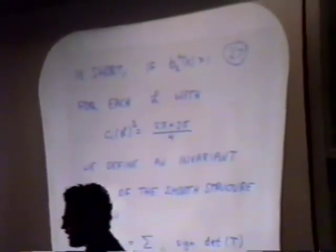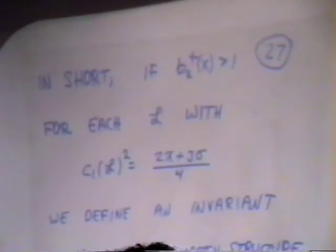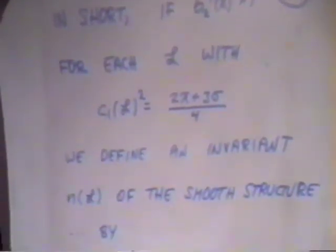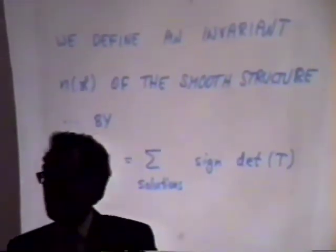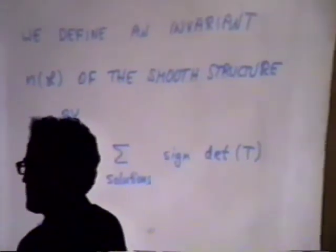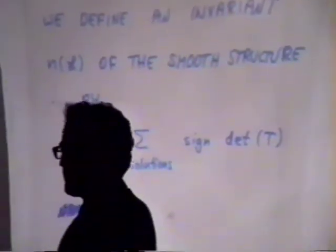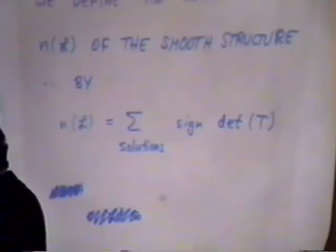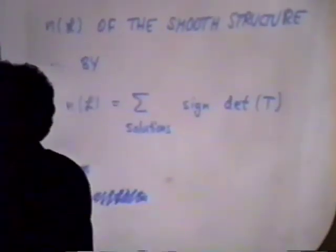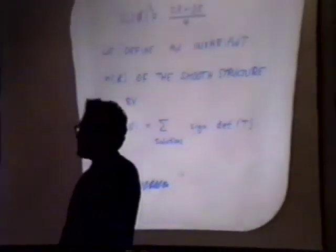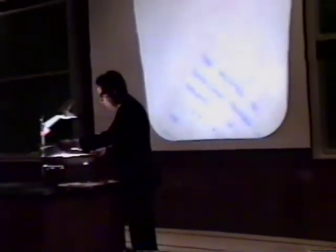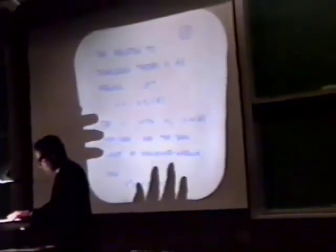In short, if B₂⁺ is bigger than one, then for every line bundle obeying this property, we define an invariant of the smooth structure as the sum of all solutions of the equations with each solution weighted by the sign of the determinant of T. This construction makes sense on its own and could well have been formulated independent of any knowledge of its relation to Donaldson theory, but in view of the way it materialized, it has a relation to Donaldson theory which I shall now explain.